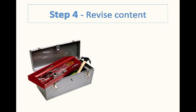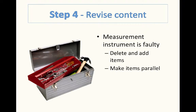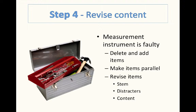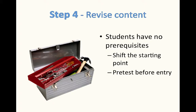Step 4: Revise content. After you've completed your analysis, you can go back and make decisions about revising. First, look at places where your measurement instrument is faulty — in other words, those test items that didn't work. You can delete and add items as needed, but make sure that all items are parallel. You can also just revise items — the stem, the distractors, and the content. Sometimes students have no prerequisites, so you may want to shift the starting point. You can pre-test before they enter the program and eliminate them, or you can vary the entry points and remediate.